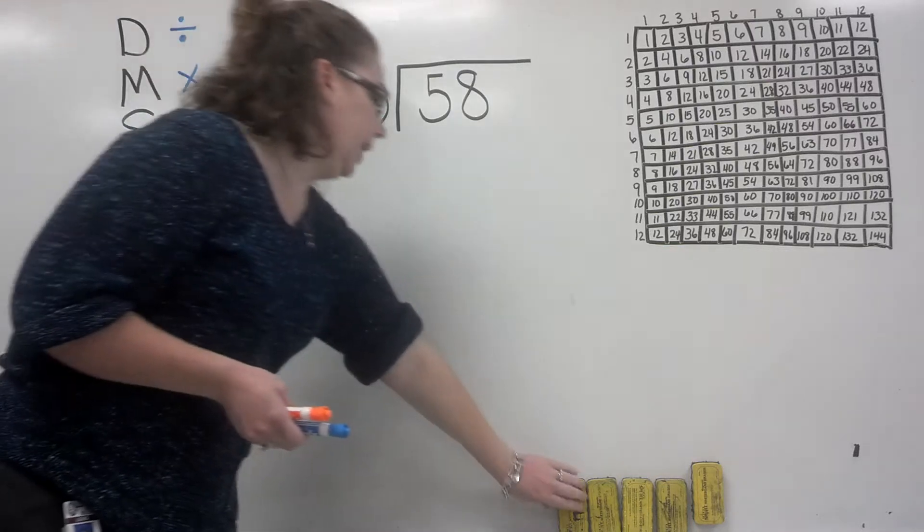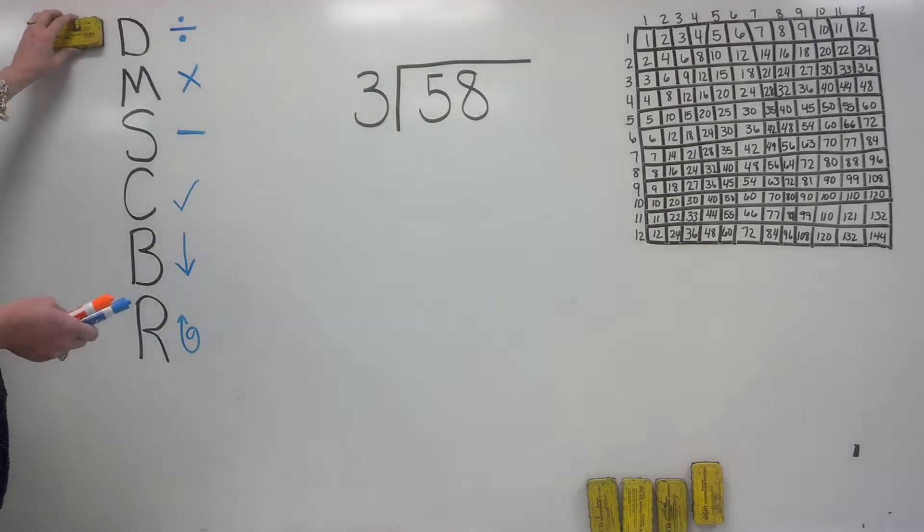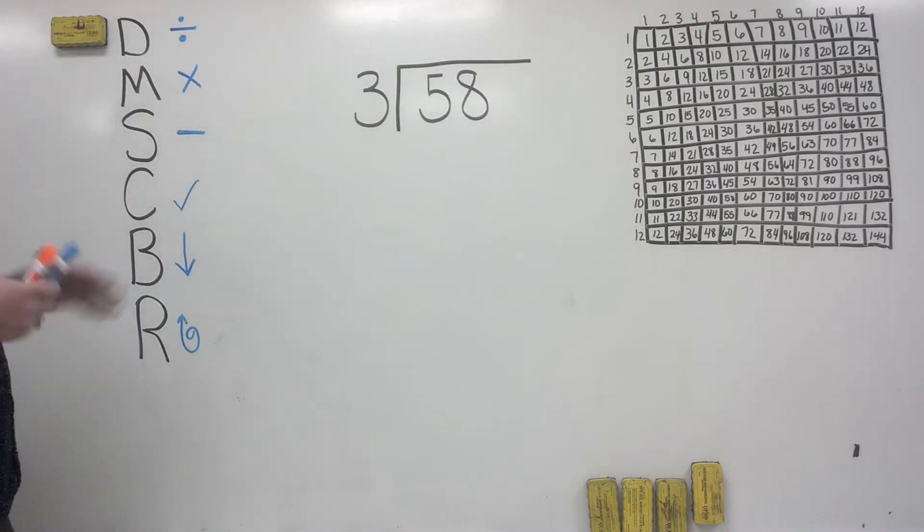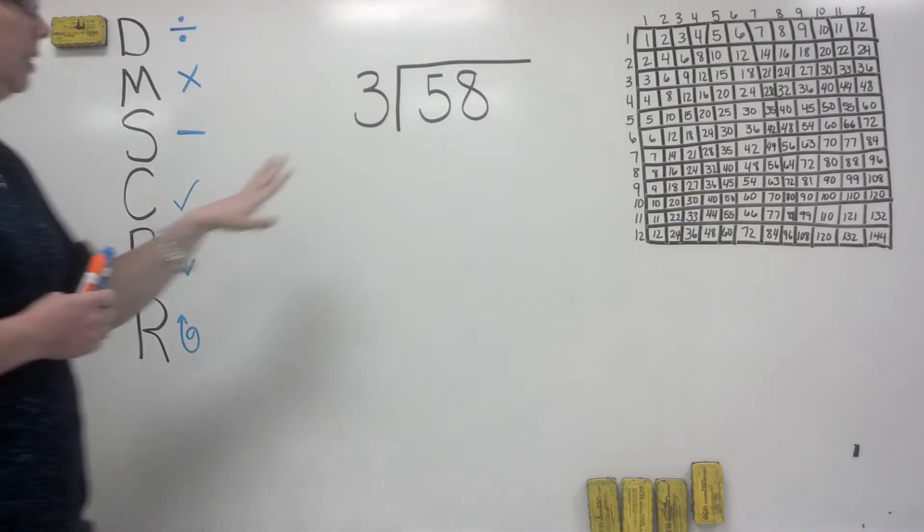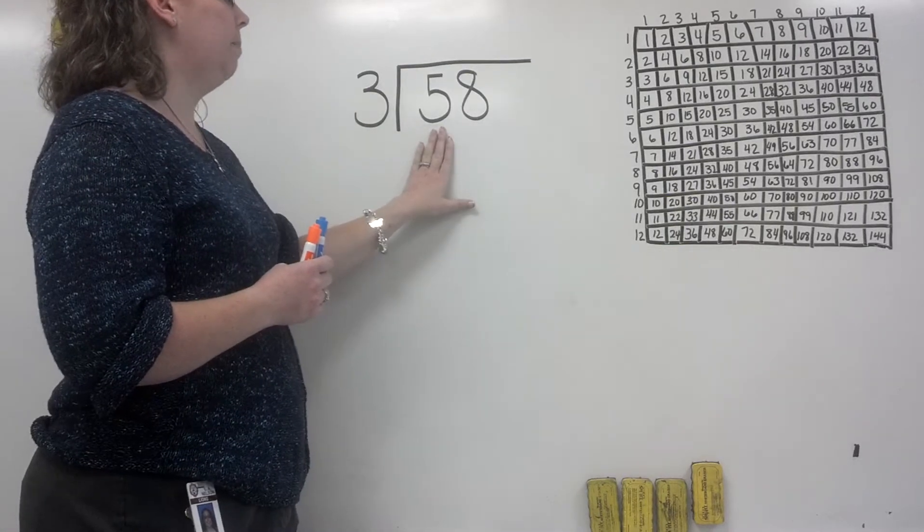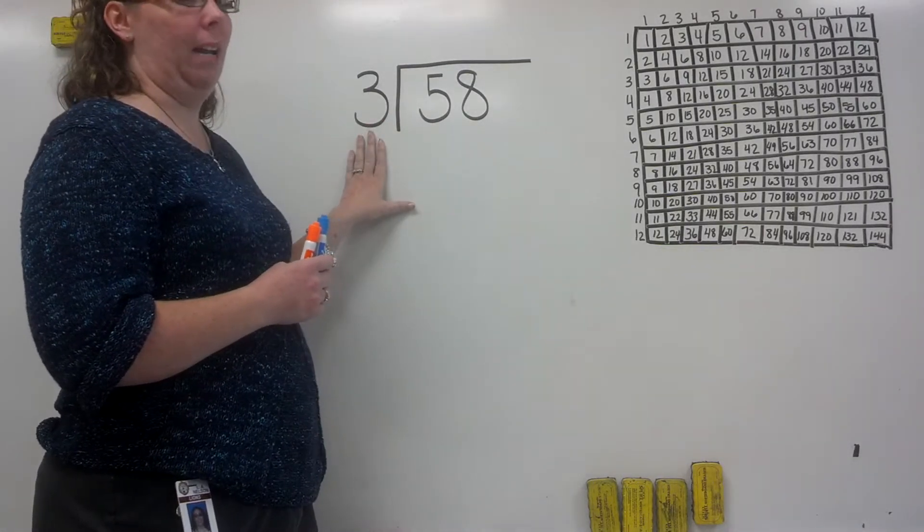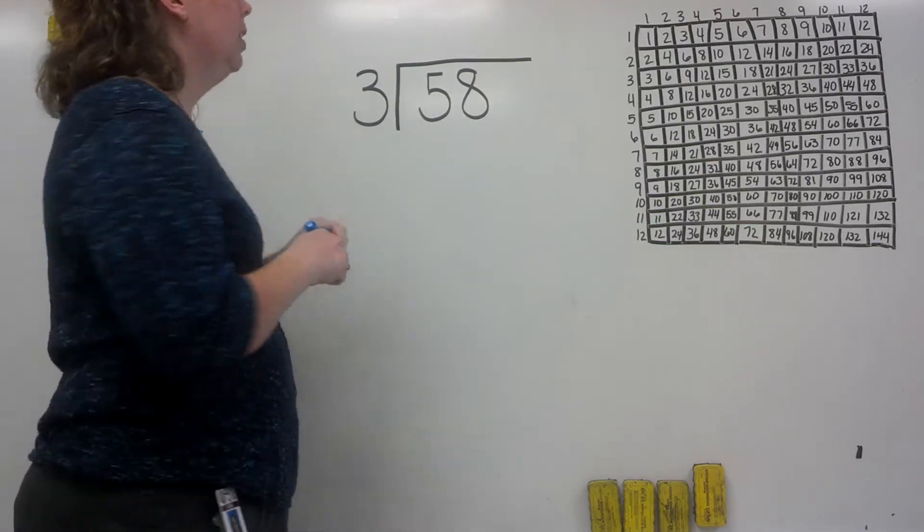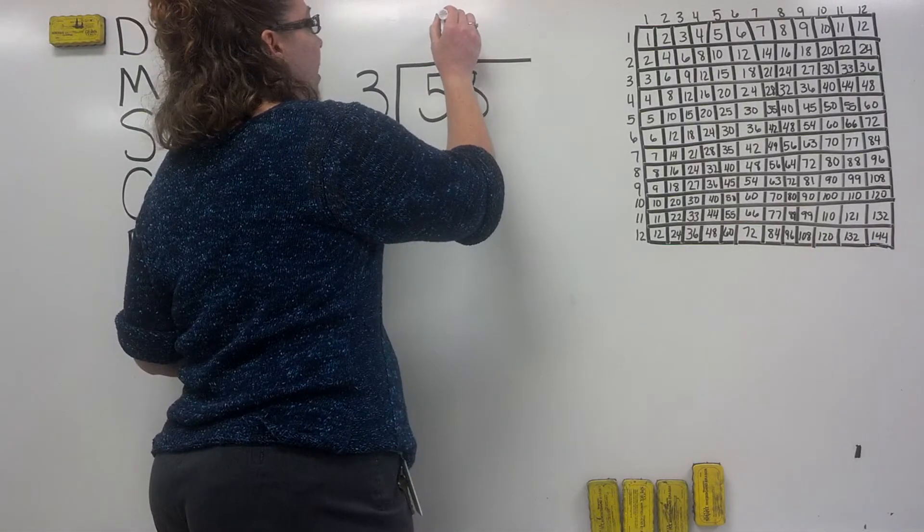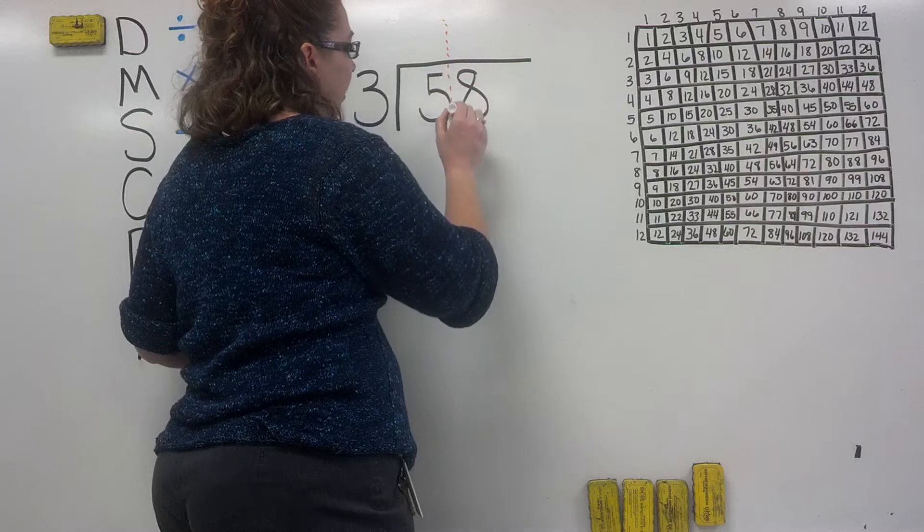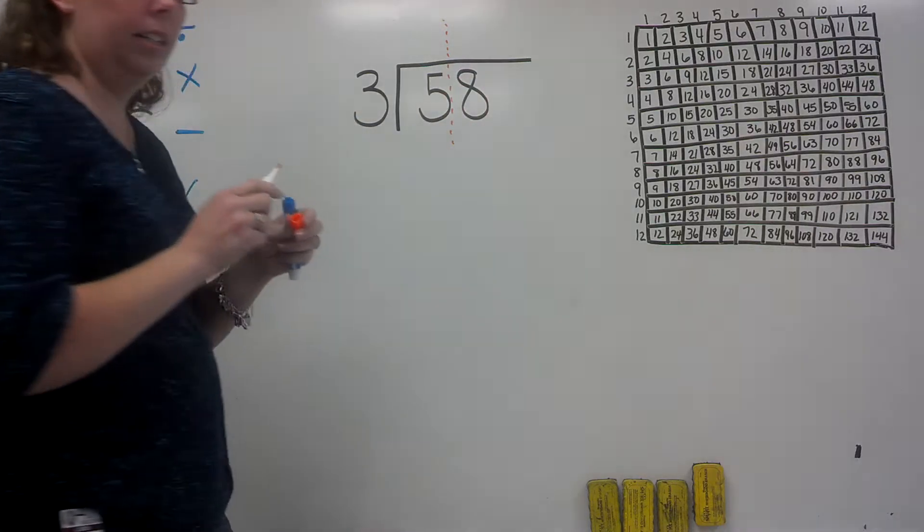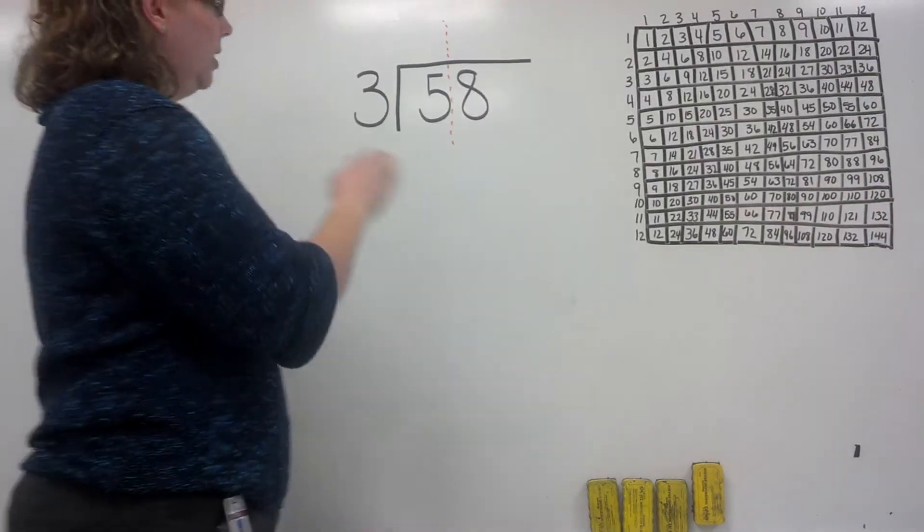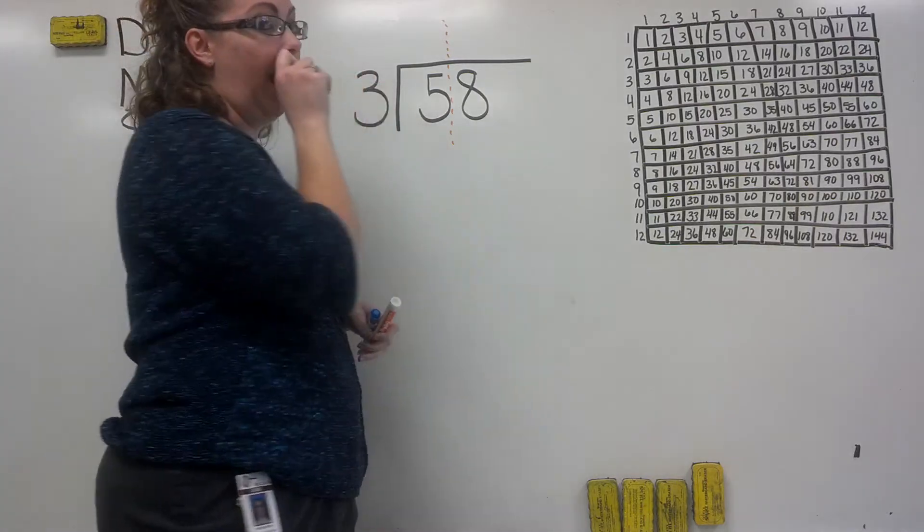We're going to mark what step we're on and move it down as we go. This is our problem: 58 divided by 3. Now what we need to do first is remember that there is an imaginary line that goes through this number. We have to first ask ourselves, will 3 go into 5?